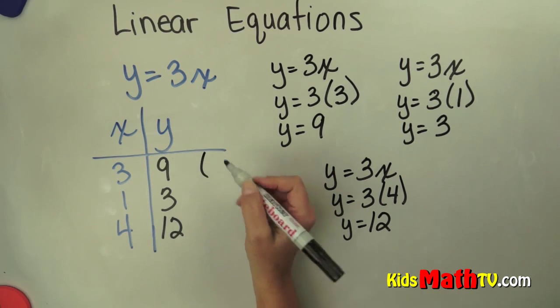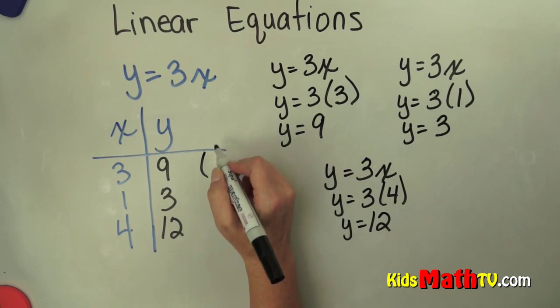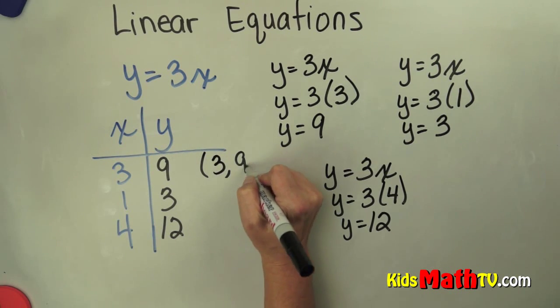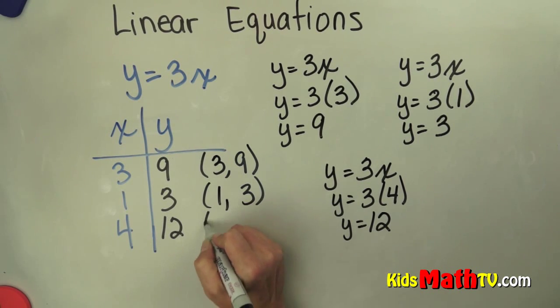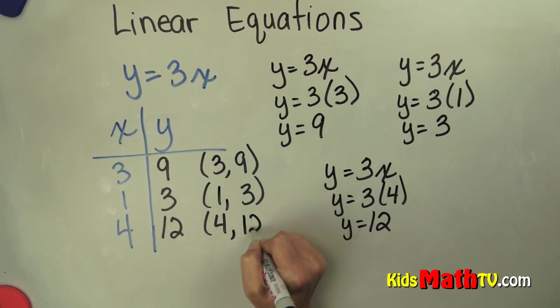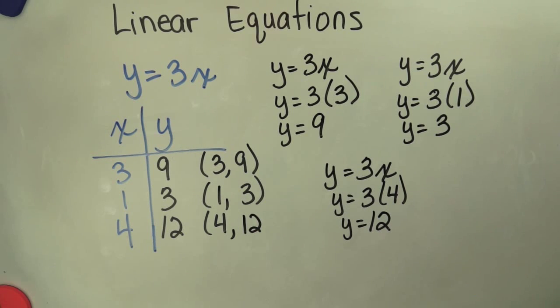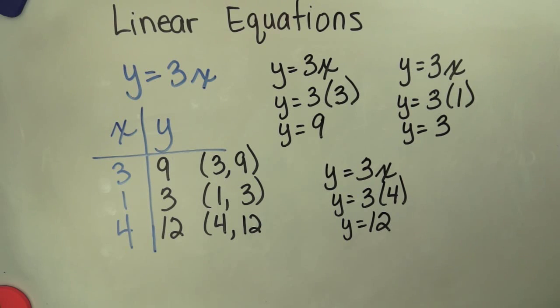Now you have these sets of points that you can put on the line: 3, 9; 1, 3; and 4, 12. So you could plot those on a coordinate grid and then draw a line. And that's the end of this lesson on linear equations.